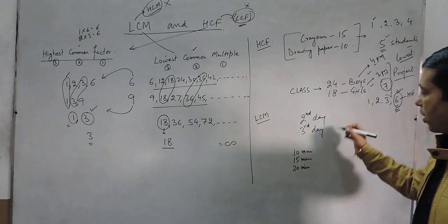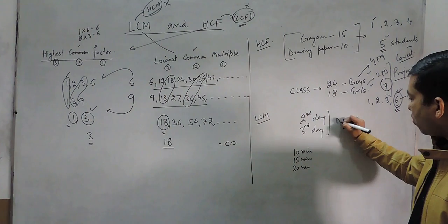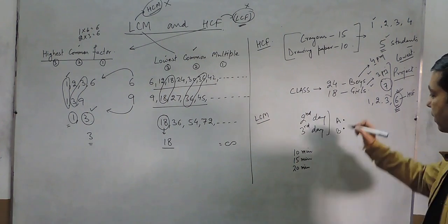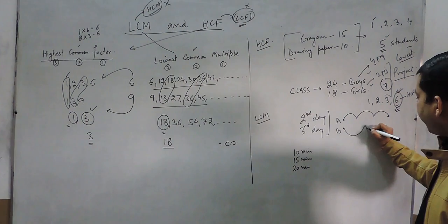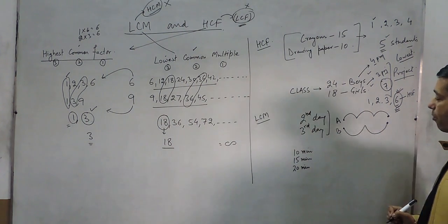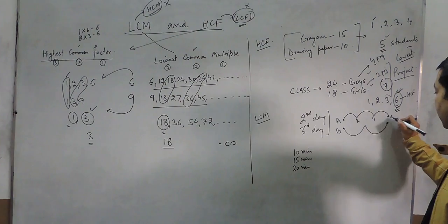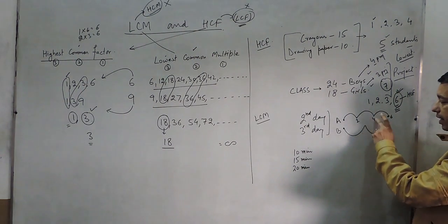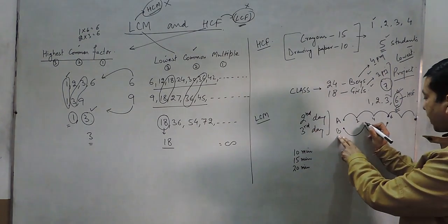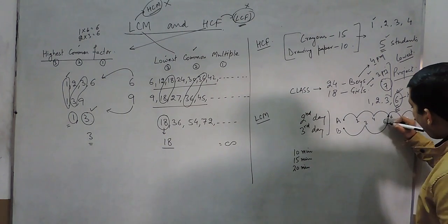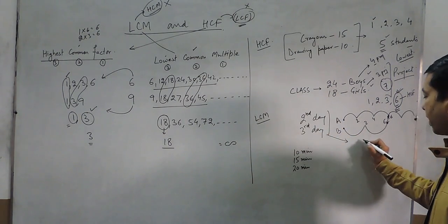Now an example for LCM. Suppose person A goes to the market every second day and person B goes every third day — after how many days will they meet? Person A goes on day 2, 4, 6, and so on. Person B goes on day 3, 6, and so on. On the sixth day both go to the market together. So the LCM of 2 and 3 is 6.